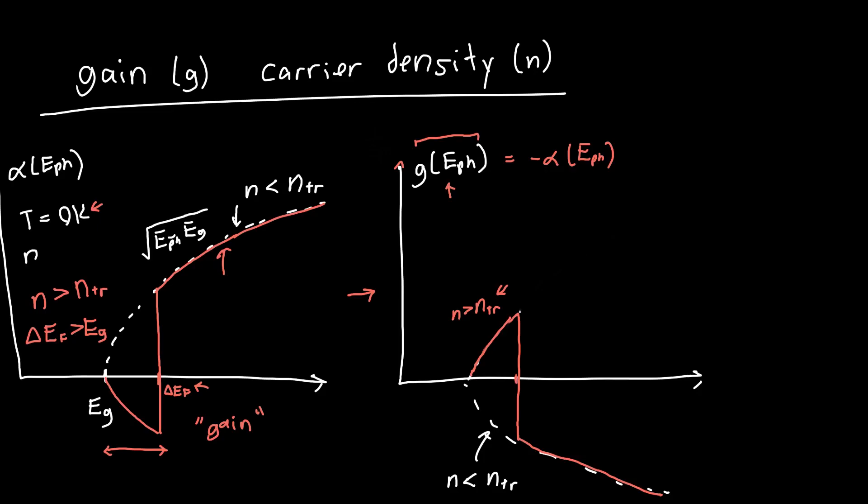We know it's got a certain Fermi level splitting delta EF, and that corresponds to a certain carrier density n. Let's say that this red curve, I don't know what the transparency carrier density is, but let's say that the carrier density is, I don't know, two times the transparency carrier density.